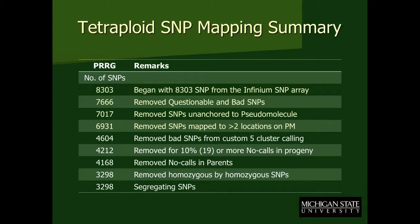We need to be able to remove the questionable and bad SNPs: ones that aren't anchored to the pseudo-molecule, ones that map to more than two locations. That's kind of standard, whether it's a diploid or tetraploid population. As I said earlier, there was only so many SNPs we felt we could use from the custom 5-cluster calling, and that was a little over 5,000.